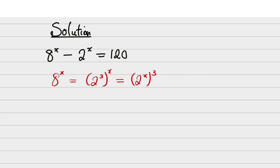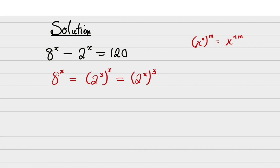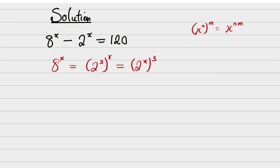Why can I write this? It is because if I have x raised to power n and raised to power m, it is the same thing as x raised to power n times m. Now, n times m is commutative, so whether nm or mn is the same. That is why I can do what I've done. Then I will replace it so that I'm going to have 2 raised to power x all raised to power 3 minus 2 raised to power x equals 120.